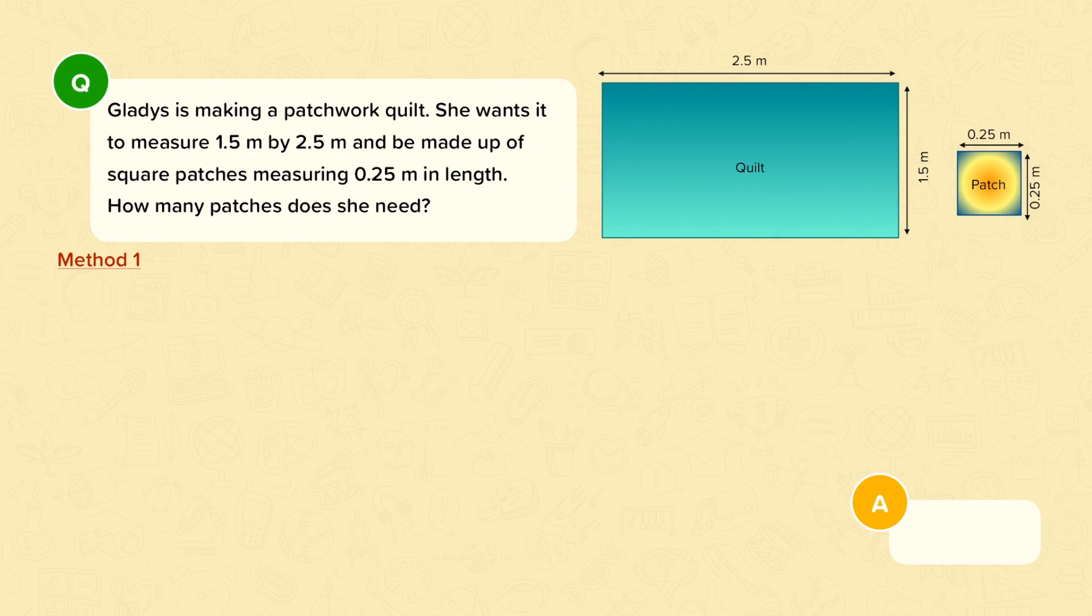There are different ways that we could answer this question correctly, so I'm going to show you two different methods. One way we could look at this is to see how many patches will fit along the length and width of the quilt. To do this we need to see how many times 0.25 goes into 2.5. So we can work that out by doing 2.5 divided by 0.25, and that tells me that 10 patches will fit along the length of the quilt.